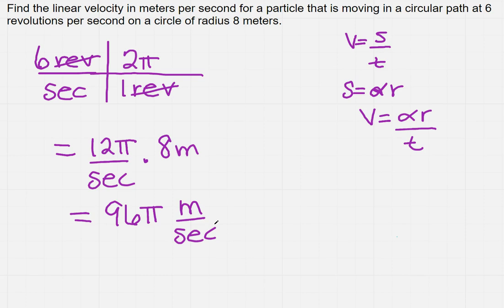Now you may need to actually provide an approximation, so when you actually do the multiplication, you're going to get 301.6 meters per second.